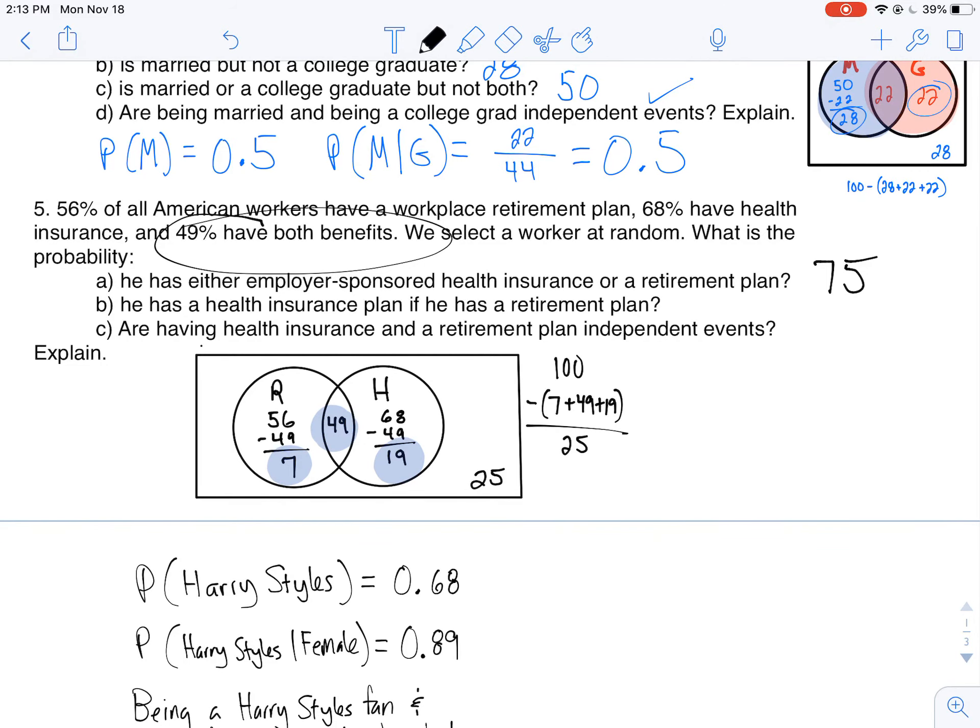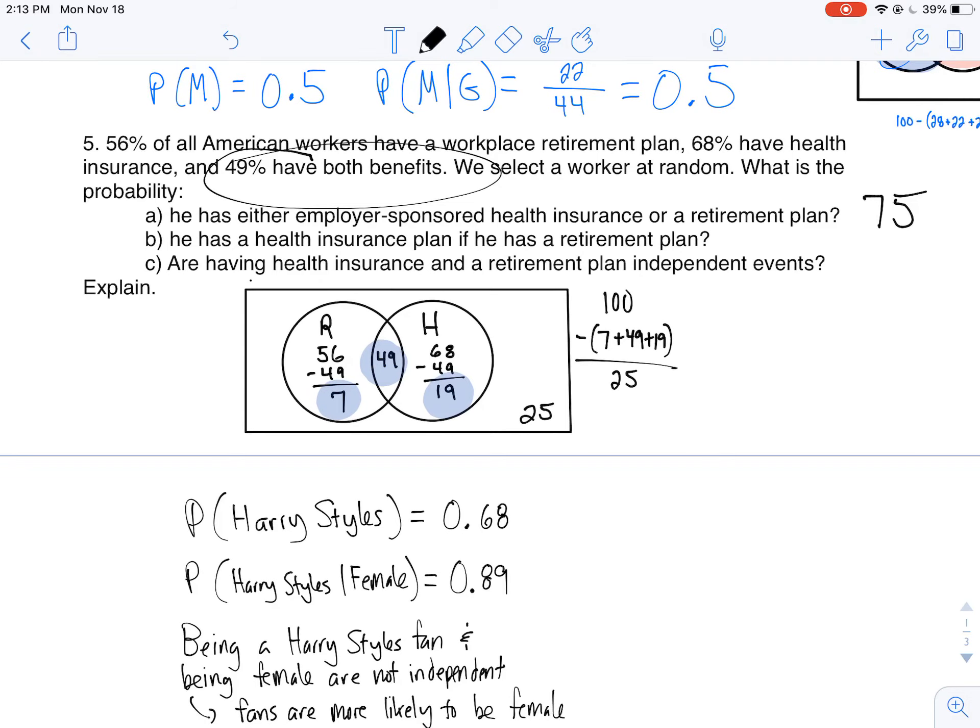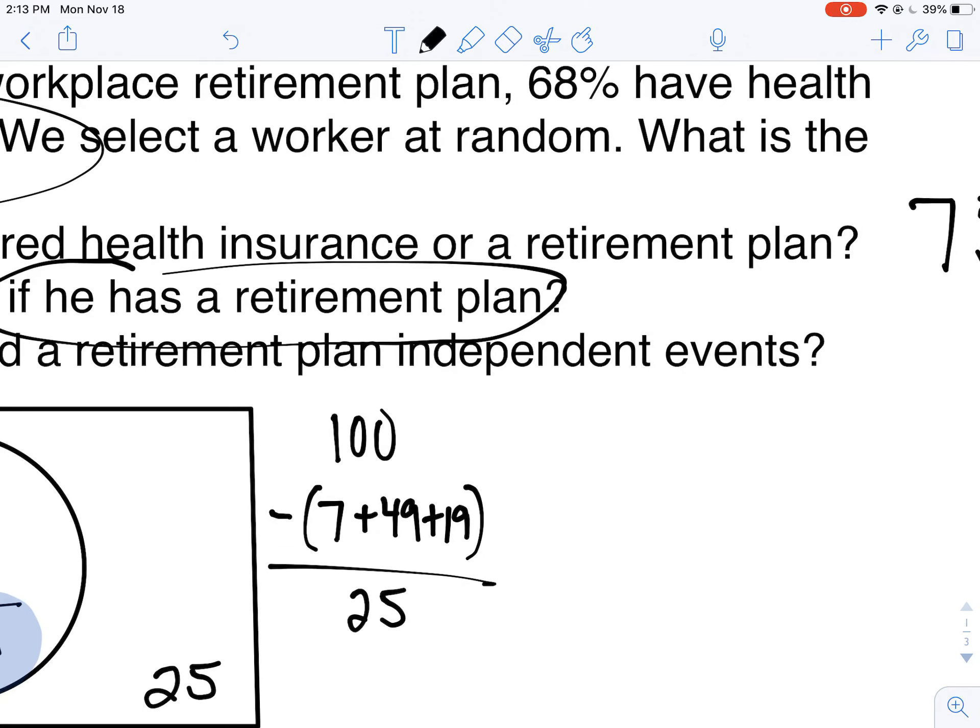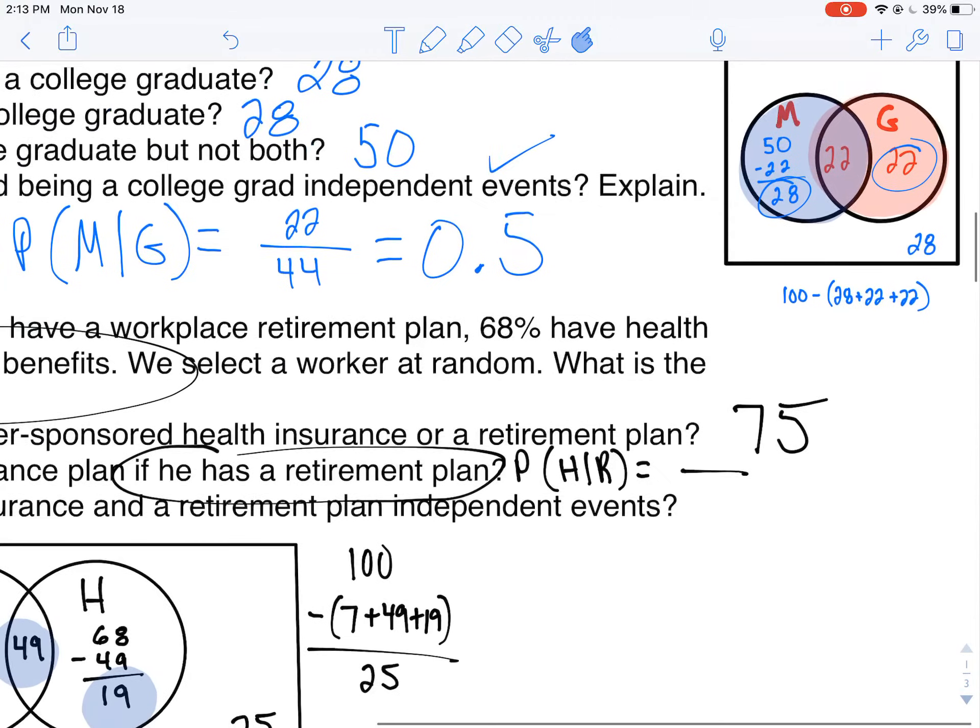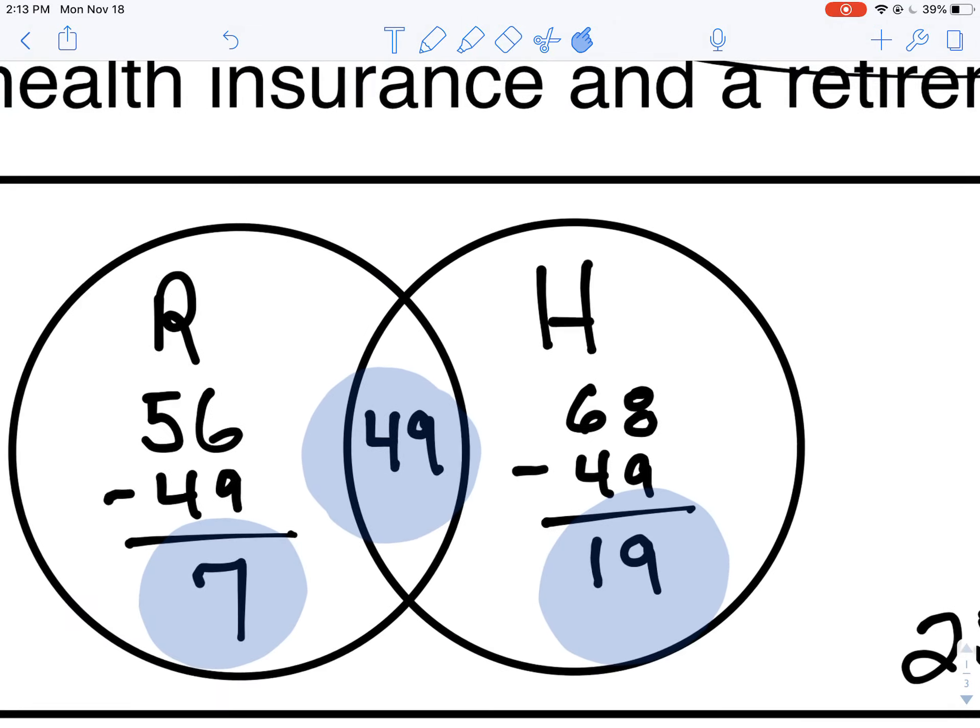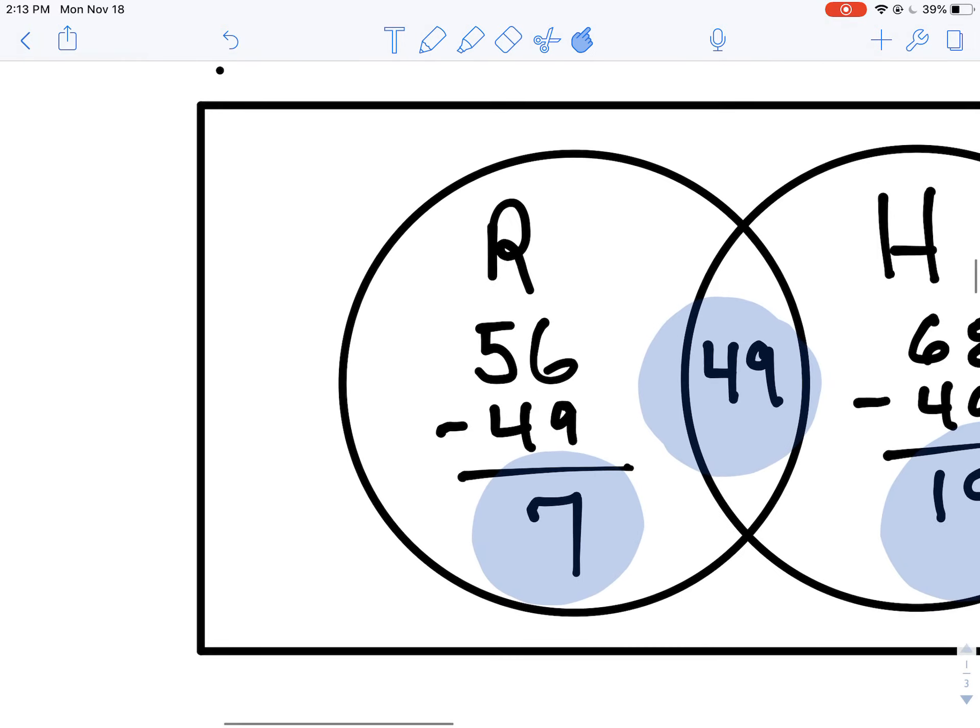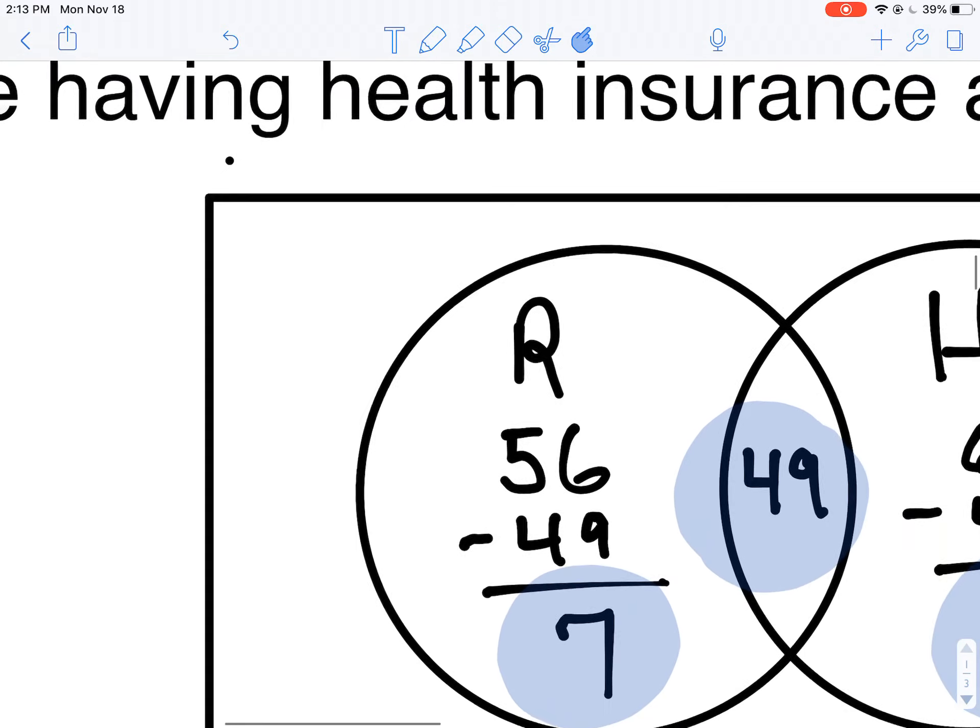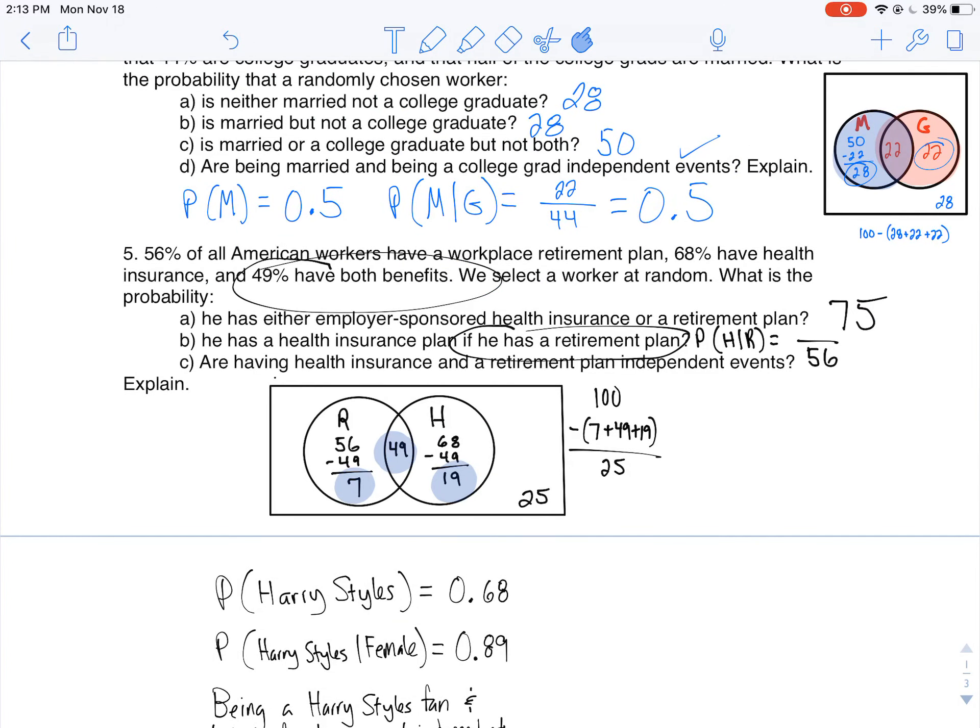He has health insurance if he has a retirement plan. So in that case, that if is my given. That means probability that he has health insurance given he has a retirement plan. Those who have a retirement plan is gonna be 56. Out of that 56%, how many of them have health insurance? I'm looking at the 56 with retirement. 49 have health insurance. So that's gonna be my given.